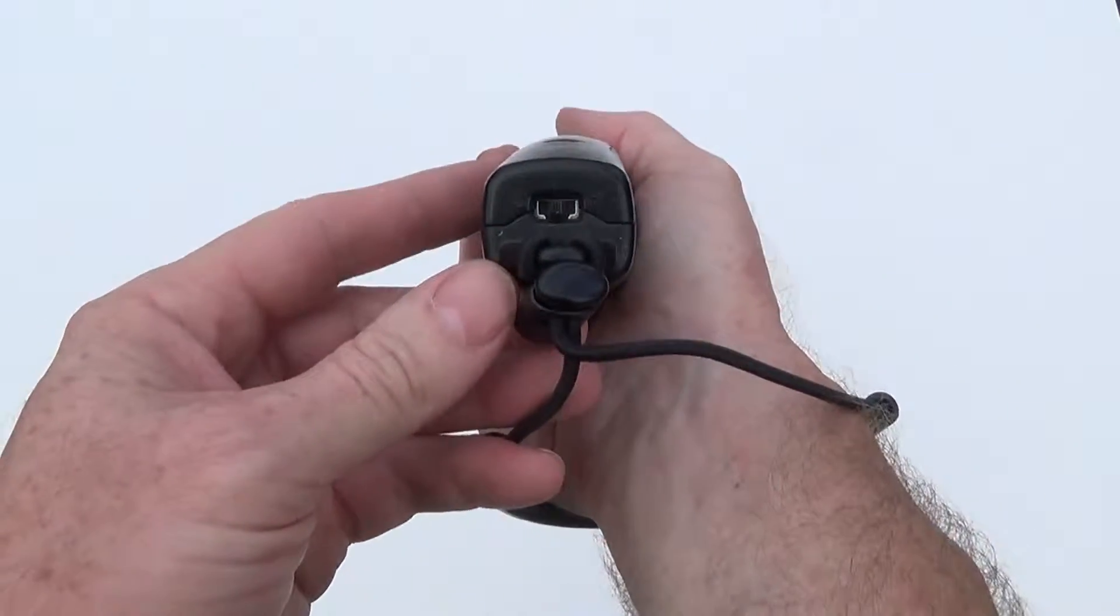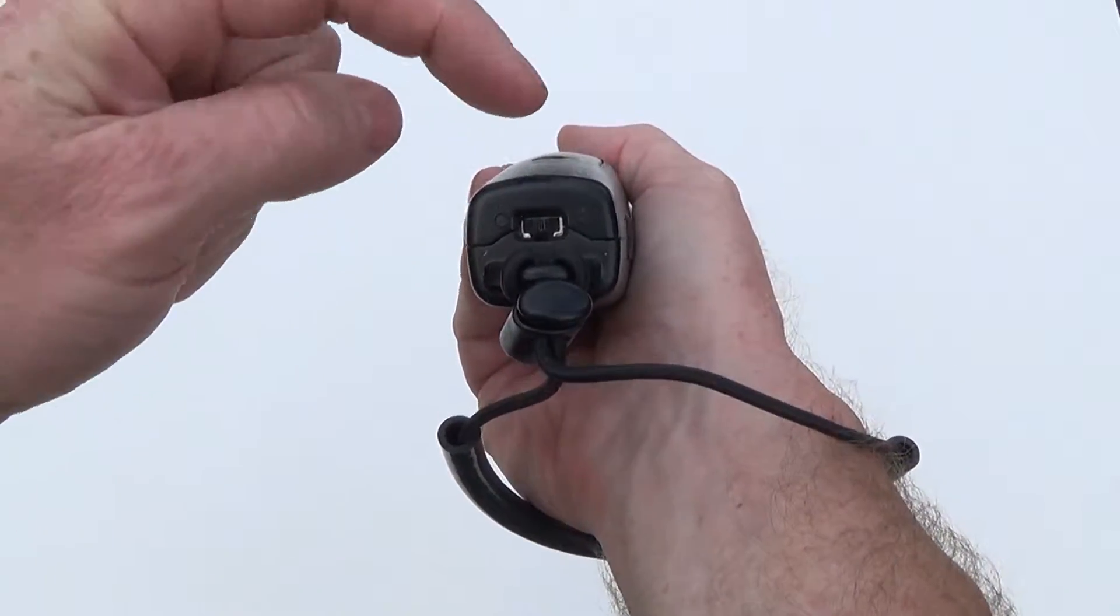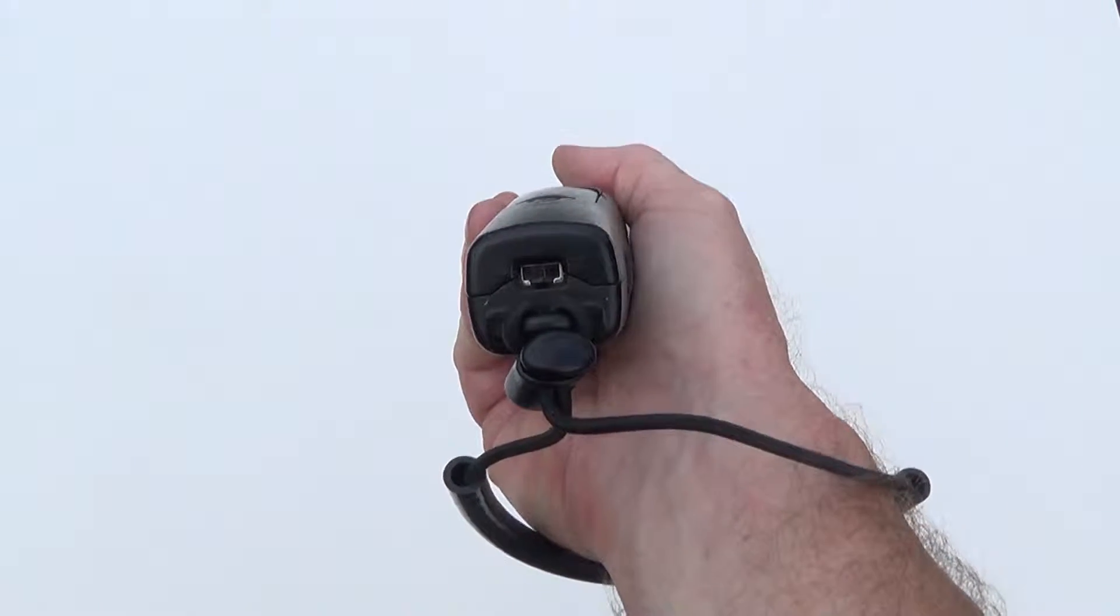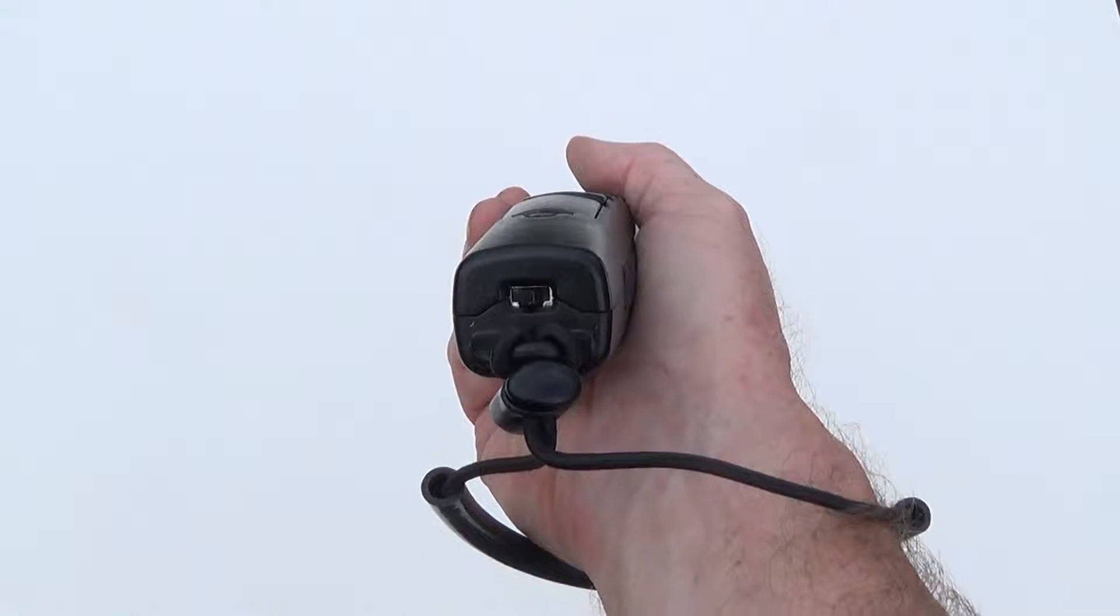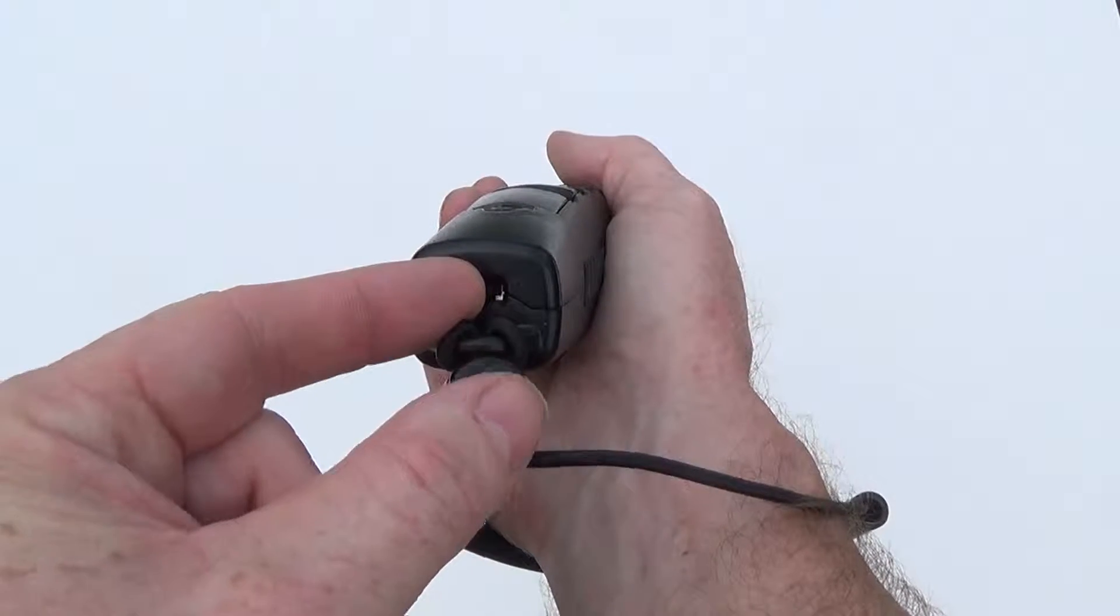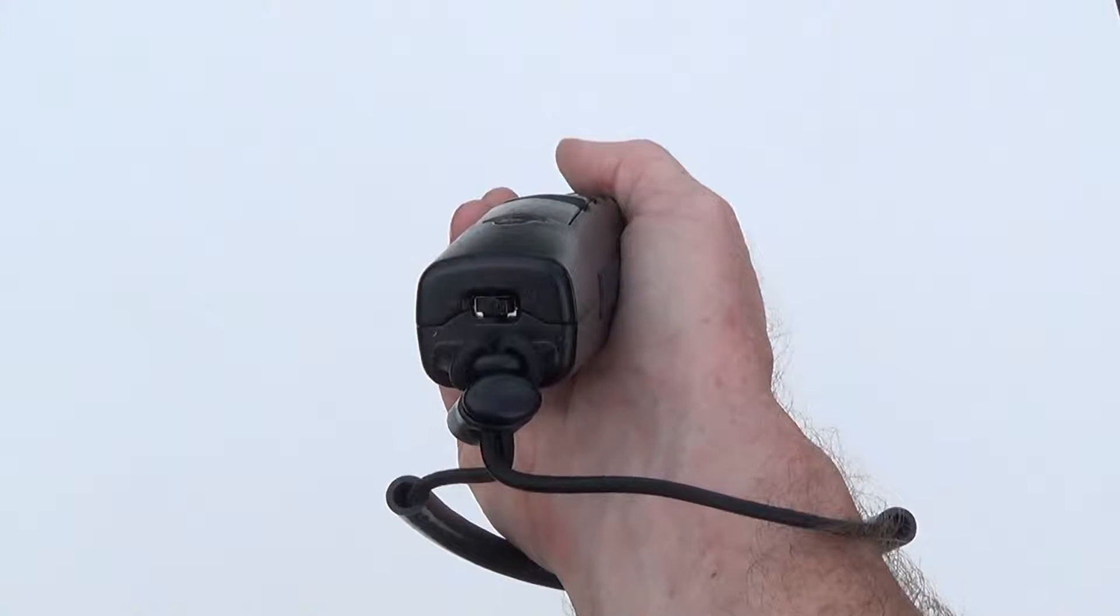The power switch has three positions: off, on or audio. To use the unit silently, choose the on position. To hear it click with every count that is collected, switch the power switch to the audio position.